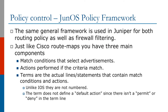For Juniper, they have a policy framework which is generally used for both routing policy as well as firewall filtering. Just like Cisco route maps, you have three main components: match conditions that select whatever you want to match, and actions which are performed if the criteria match. These match conditions and actions are contained in terms. A term is a line of statement containing those match conditions and actions. Unlike IOS, terms are not numbered and do not define a default action since they do not contain a permit or deny keyword.